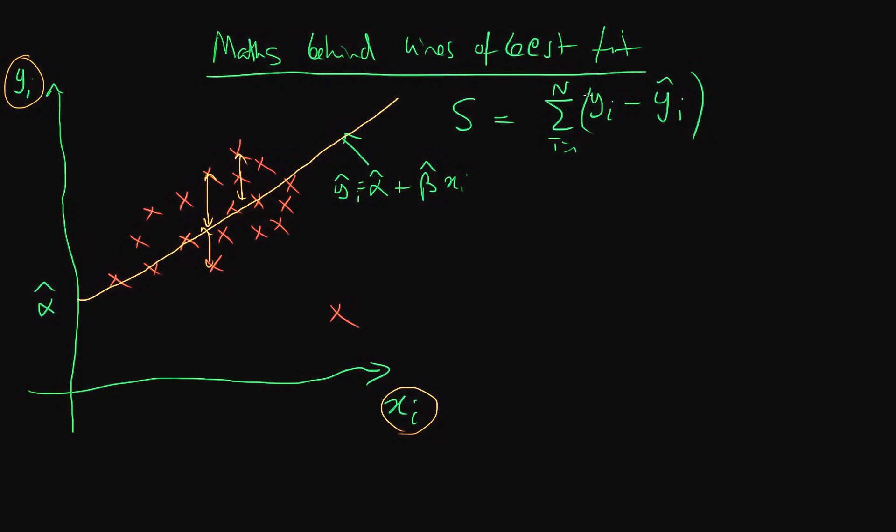Actually, what I should be putting in here is we should have modulus signs, because what we care just as much about under predicting—this sort of point relative to the line—as we do about a point that would be equally as far away but below the line.